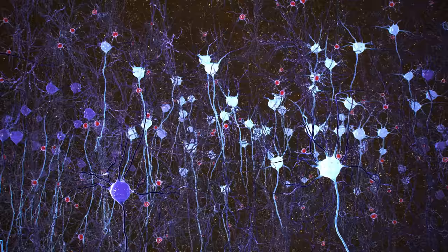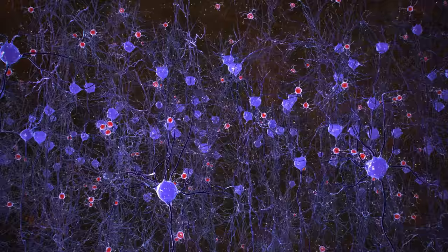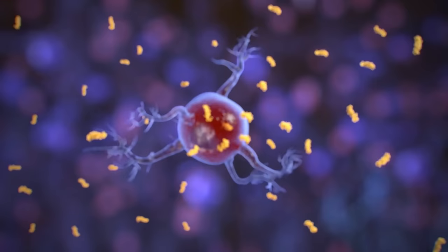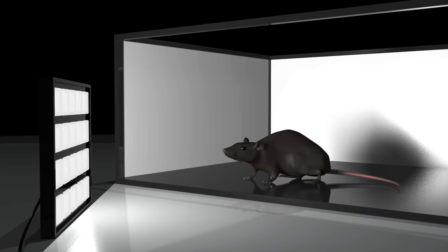In addition, the 40 Hz flickering light treatment caused microglia in Alzheimer's mice to become more active and dramatically increase in size by engulfing amyloid beta.